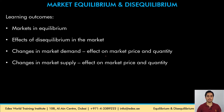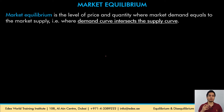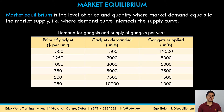Market equilibrium is that level of price where the quantity demanded by the market is equal to the quantity supplied by the market, and as a result there is balance in the market. Equilibrium means balance, and balance happens when the quantity demanded equals the quantity supplied. The demand curve is downward sloping and the supply curve is upward sloping, so for both to be equal they have to intersect at a point — that point is known as the market equilibrium point. Let's combine the demand schedule and supply schedule from the previous two videos and derive the equilibrium.